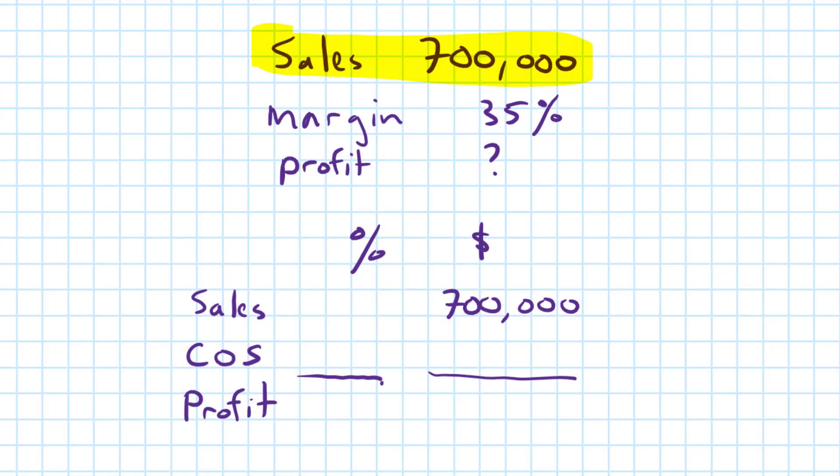Welcome back. So first step, let's put 100% next to the sales. And now that margin comes down here. And the rest of this, easy peasy. We multiply 700 times 35 divided by 100, or $700,000 times 0.35, and we get $245,000.